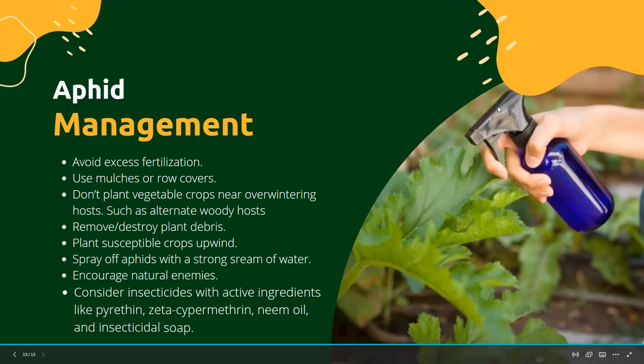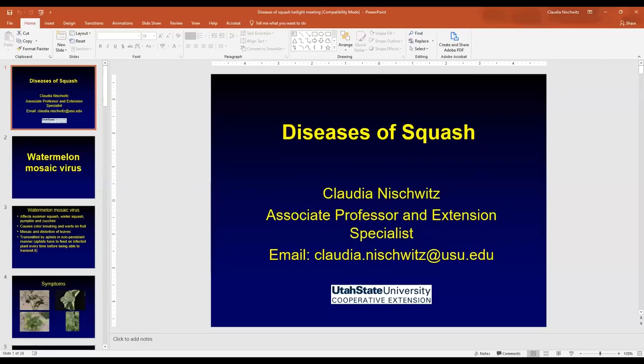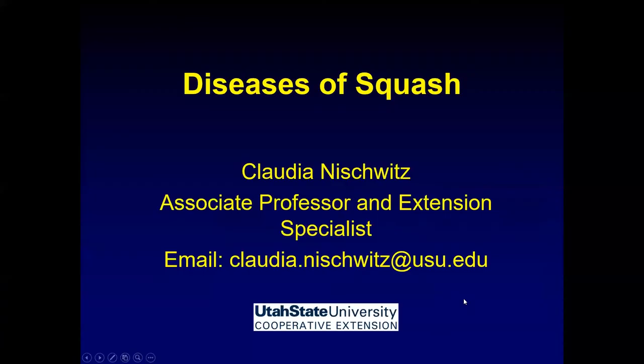Those are the common insects we see on our summer squash. I'll link more information about those in the chat. Now I'll hand it over to Claudia, who is going to talk about different diseases we can see in our cucurbit crops. As Nick mentioned, these diseases can be found not only on summer squash but also on melons, cucumbers, winter squash, and pumpkins. She starts with a virus that's actually aphid-transmitted: watermelon mosaic virus.